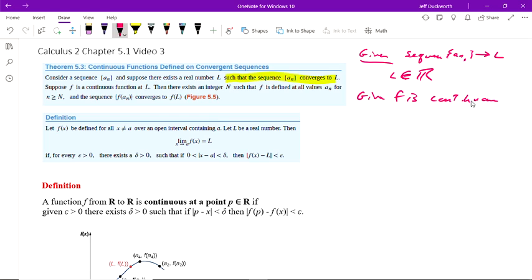Then there exists an integer capital N such that F is defined at all values A_N for N greater than or equal to N. In the sequence, F of A of N converges to F of L. So we're going to try to use the old definition of the function limit and see if we can do the same thing with the sequence limit. We're looking at the definition here, this is a definition of continuous at a point.